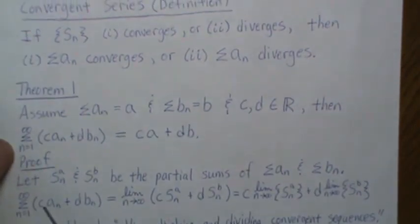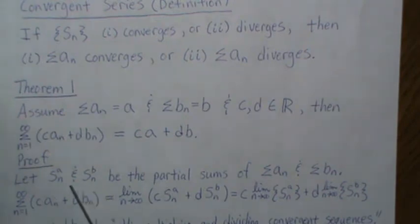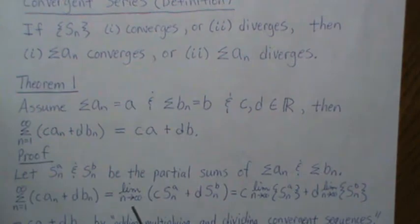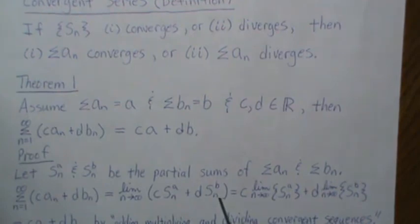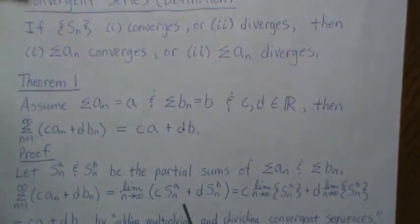Now, the proof of that is if we let S in A and S in B be the partial sums of these respective series, then this series can be thought of as the limit as N goes to infinity. And we plug in the partial sums or the sequences here. Now we're dealing with sequences. And we've done so many videos on sequences,